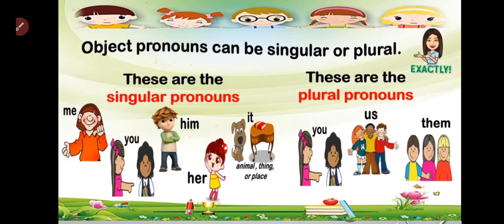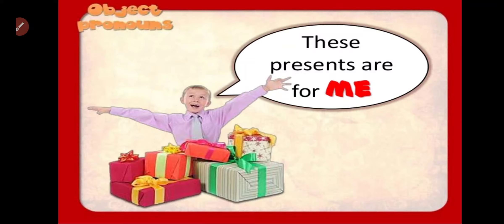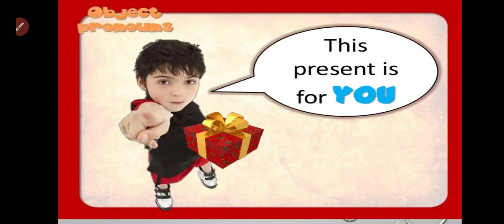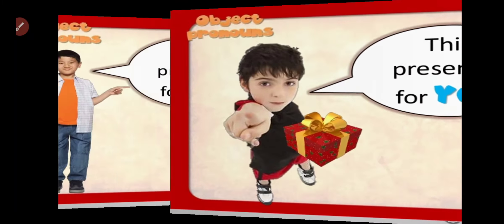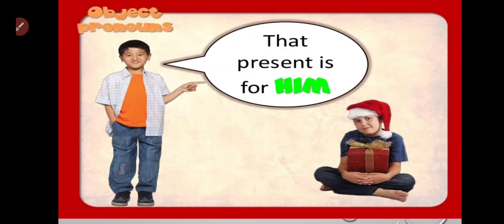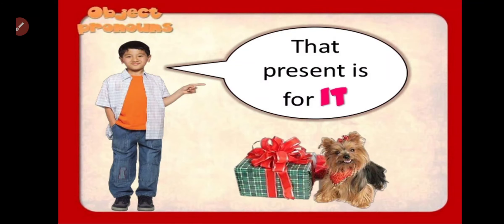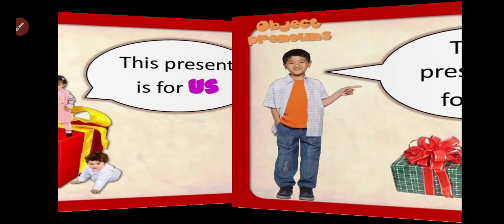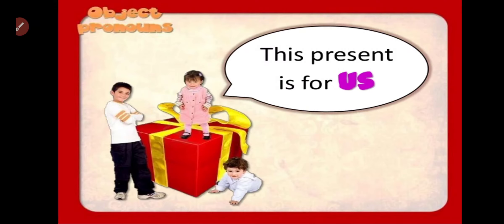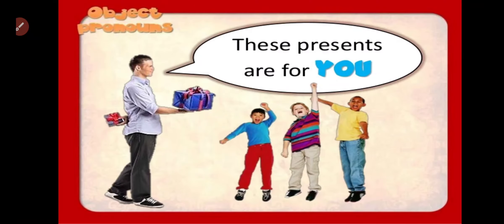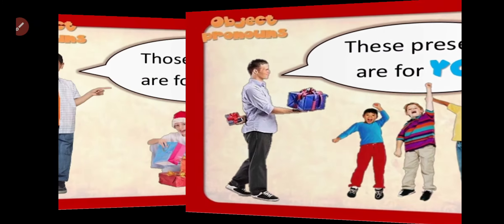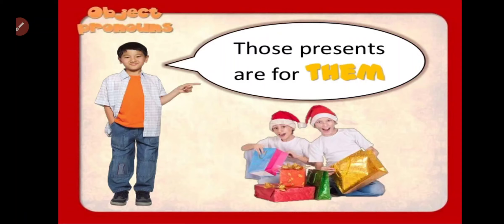Object pronouns can be singular and plural. Me, you, him, her, and it are singular pronouns. You, us, and them are plural pronouns. For example: these presents are for me; this present is for you; that present is for him; that present is for her; that present is for it; this present is for us; these presents are for you; those presents are for them.